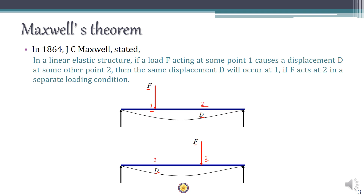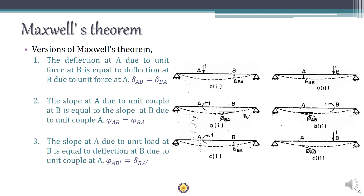So if a load acting at point one causes a displacement d at point two, then the same displacement d will be caused at point one if the same load acts at point two. There are three variations of Maxwell's theorem shown here.